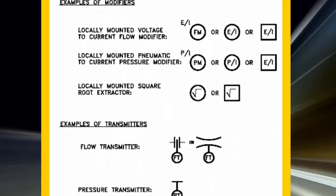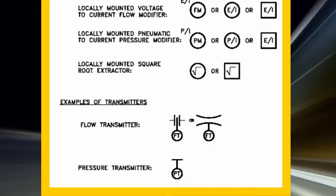Transmitters are used to convert the signal from a sensor or detector to a form that can be sent to a remote point for processing, controlling, or monitoring. The output can be electronic, voltage, or current.